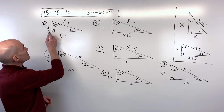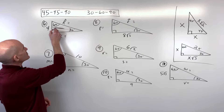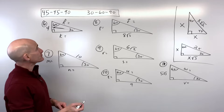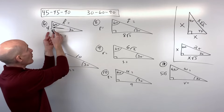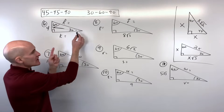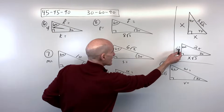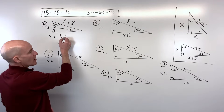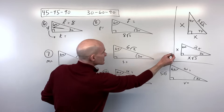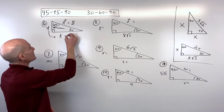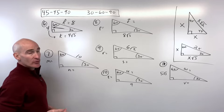For number six, they're giving us the side across from the 30-degree angle — the shortest leg — which is 4. To get the hypotenuse, I just double it: x to 2x, so 4 times 2 is 8. To get the longer leg, I take the shorter leg and multiply by √3, giving 4√3.